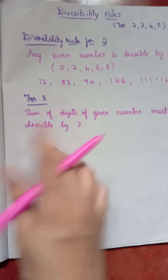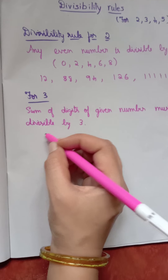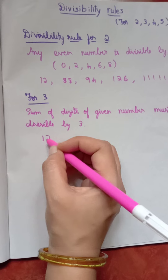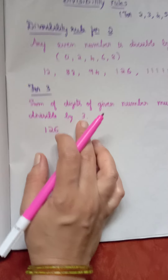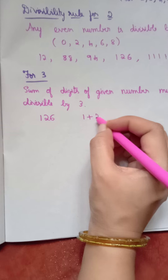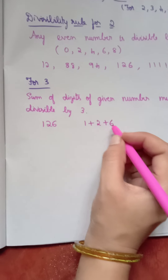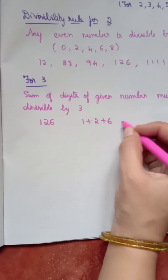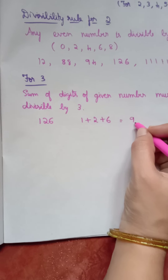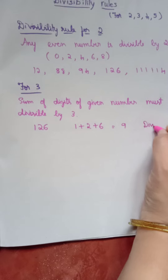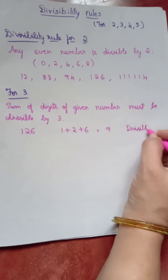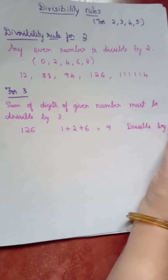Suppose you take the number 126. To check whether it is divisible by 3, you need to add all the digits. What is the sum of the digits? 1 plus 2 plus 6: 1 plus 2 is 3, and 3 plus 6 is 9. Since 9 is divisible by 3, therefore 126 is divisible by 3.